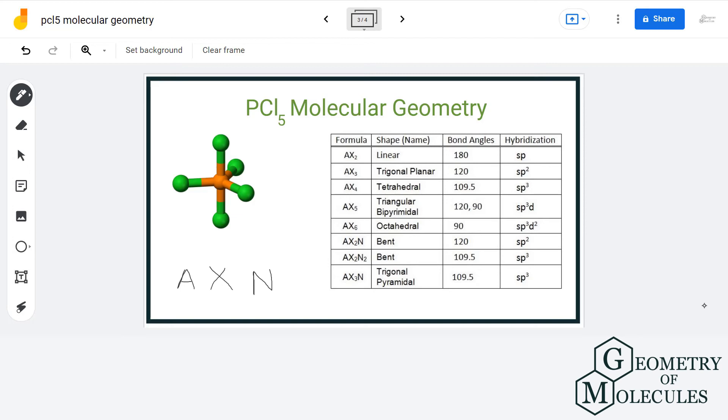So here we have phosphorus as the central atom. There are five chlorine atoms attached to it and no lone pairs of electrons. This gives us a final notation of AX5. If we refer to this table, we can see that molecules that have AX5 formula